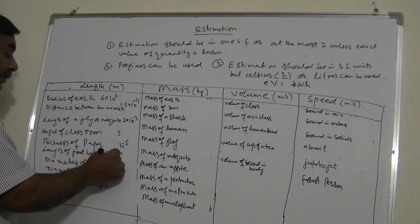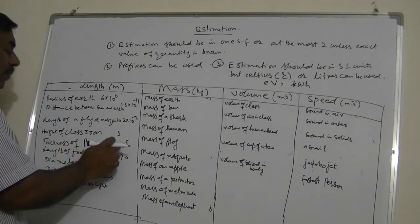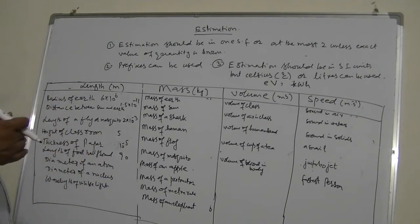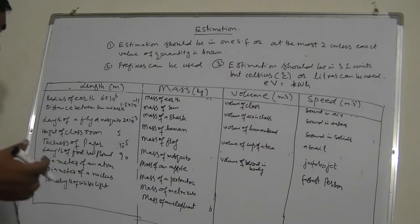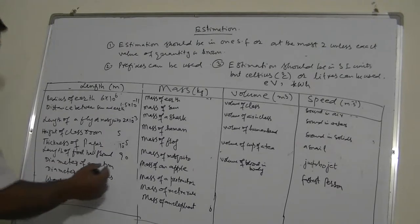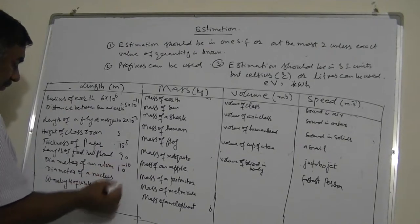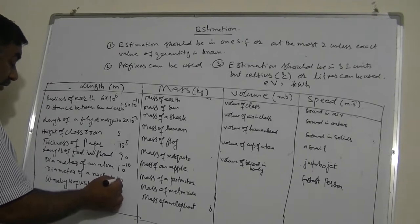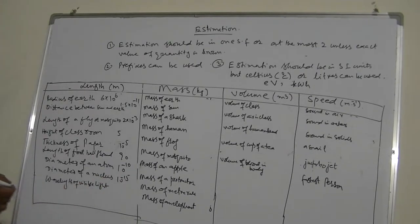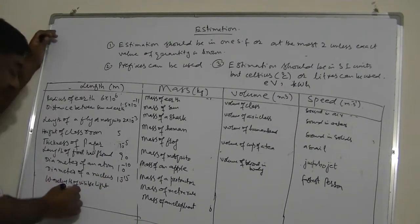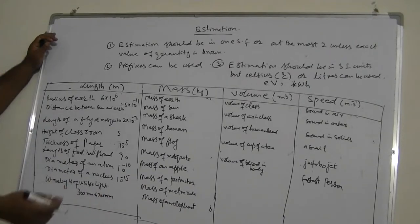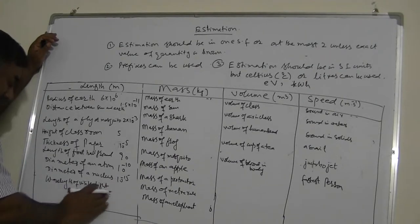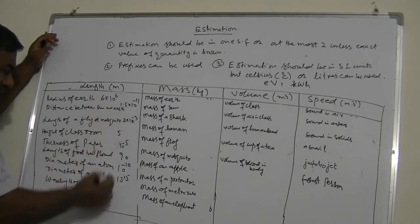The length of a football ground is approximately 90 meters, which can also be written as around 10² meters. The diameter of an atom is estimated as 10⁻¹⁰ meters, and the diameter of a nucleus is 10⁻¹⁵ meters. The wavelength of visible light ranges from 300 nanometers to 700 nanometers; a good estimate in the middle is 500 nanometers, or 5 × 10⁻⁷ meters.